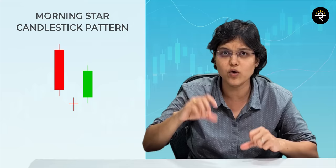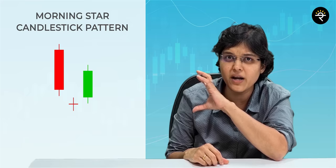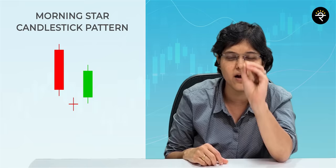Just in case you don't know about candlesticks and want your basics to be clear, don't forget to watch my separate video already posted on YouTube on basics of candlesticks. So what's a morning star candlestick pattern? It's basically a three-candle pattern. The very first candle is generally a big red candle — the body of that big red candle is pretty big and the wicks are not that big. All these terminologies — what is the body of a candle, what is the wick — are explained in that same video.